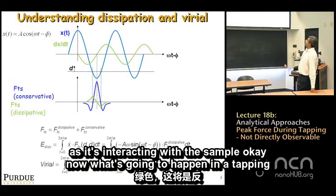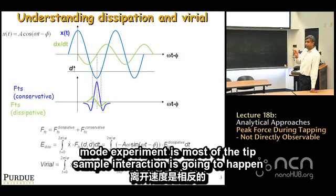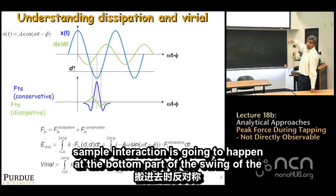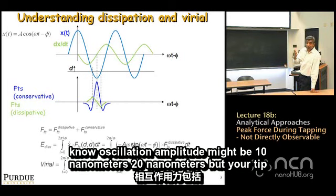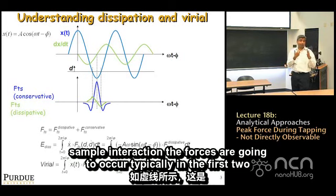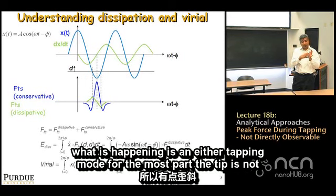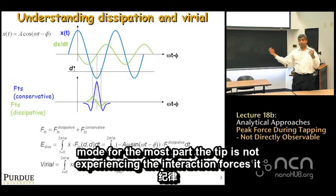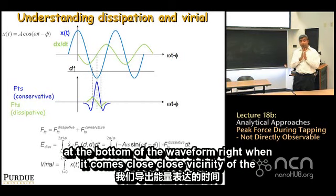In a tapping mode experiment, most tip-sample interaction occurs at the bottom of the cantilever's swing. The oscillation amplitude might be 10–20 nanometers, but the tip-sample interaction forces typically occur in the first 2–5 nanometers. So for most of the oscillation, the tip is not experiencing interaction forces — only at the bottom of the waveform, when the tip is in close vicinity of the sample.